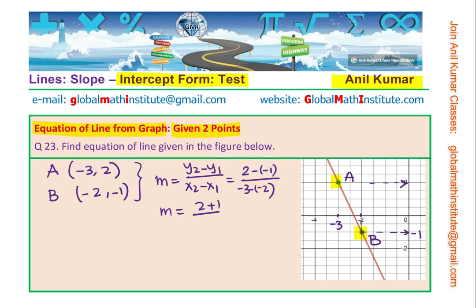Basically, 2 plus 1 over minus 3 plus 2. That gives us 3 over minus 1 or negative 3. Makes sense. The line is going downwards. If the line is going downwards, the slope has to be negative.